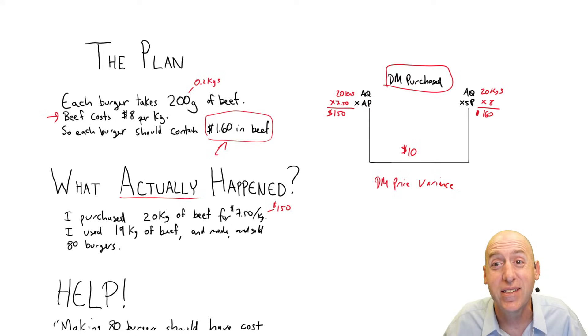Favorable gets an F, unfavorable gets a U. Favorable means good, unfavorable means bad. So just looking at this in a vacuum, obviously there's some bad news for Bill, but looking at this in a vacuum, was the price variance favorable or unfavorable? Well, it's favorable. He saved money. He thought he was supposed to spend $8 per kilogram. He spent $7.50. This is good news. This is a favorable variance. So his direct materials price variance is $10 favorable.